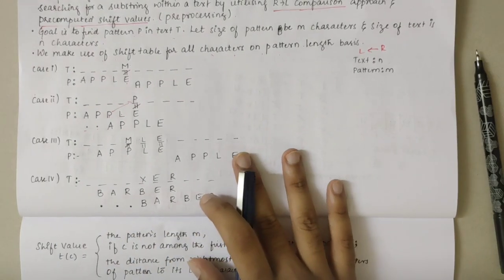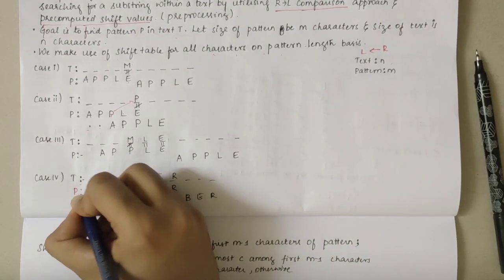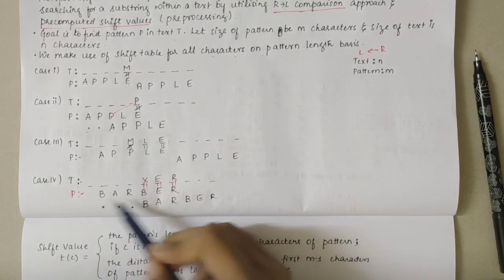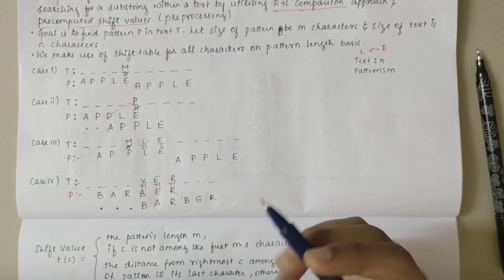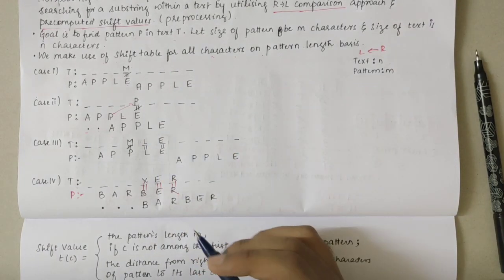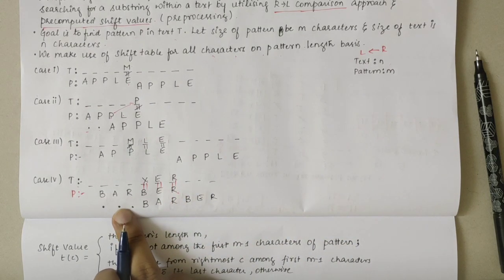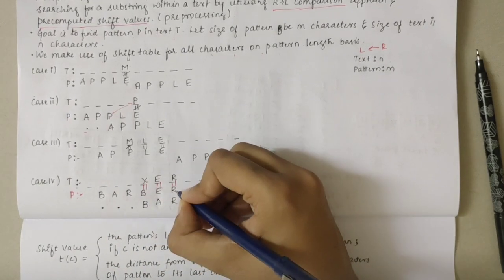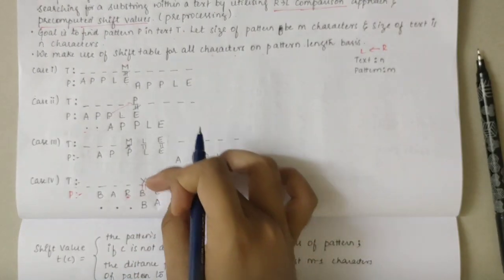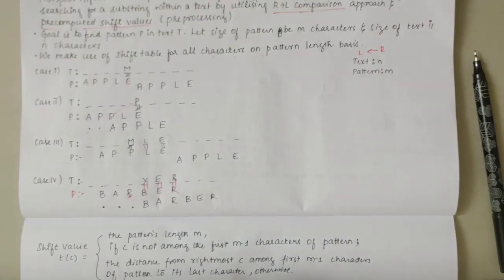For the fourth condition, we have some text values and pattern values. R and R are matching, E is matching, but then X and B are not matching. I check if X is present in the pattern — X is not present anywhere. This is similar to case 2, but here the rightmost occurrence of the mismatched character among the first M-1 characters of the pattern should be aligned with the text. So I make sure that R in the pattern aligns with R in the text, requiring 3 shifts. That was the fourth condition.